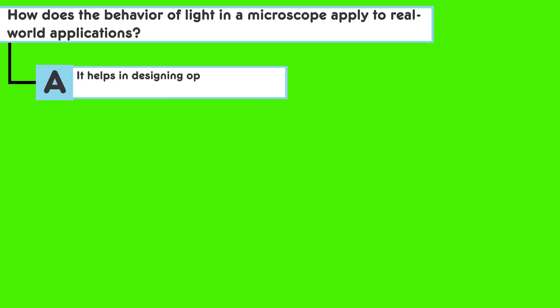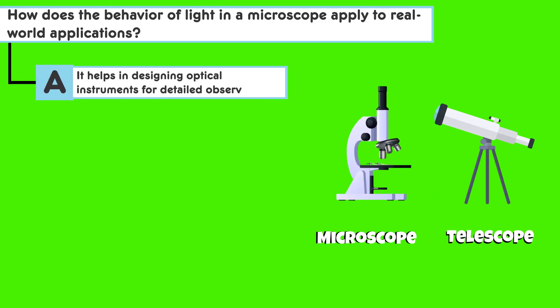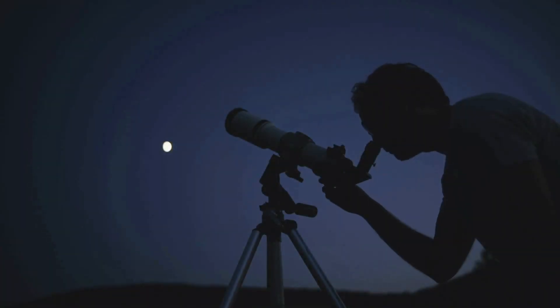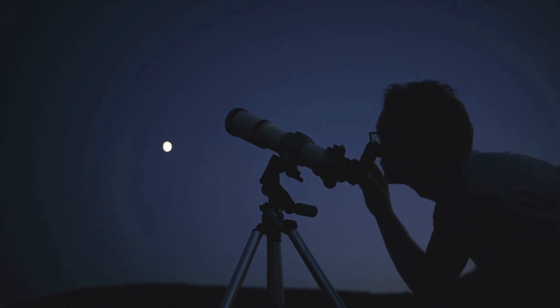Answer choice A: It helps in designing optical instruments for detailed observations. Here's a quick tip. Think about how the principles of light travel and refraction are used in devices like microscopes and telescopes.